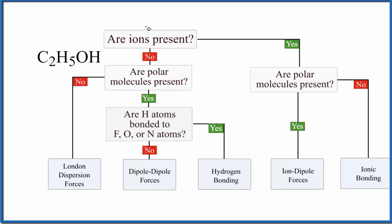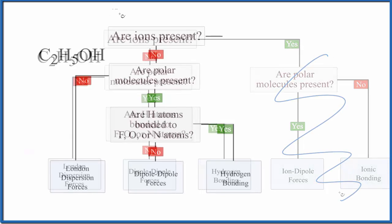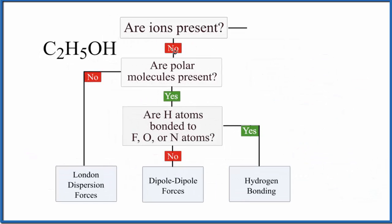So the first question we ask, are there any ions present? Do we have any ions here? They're all non-metals, and we don't have a negative or positive after the C2H5OH. So we don't have any ions present. We can get rid of this here. There are no ions present.